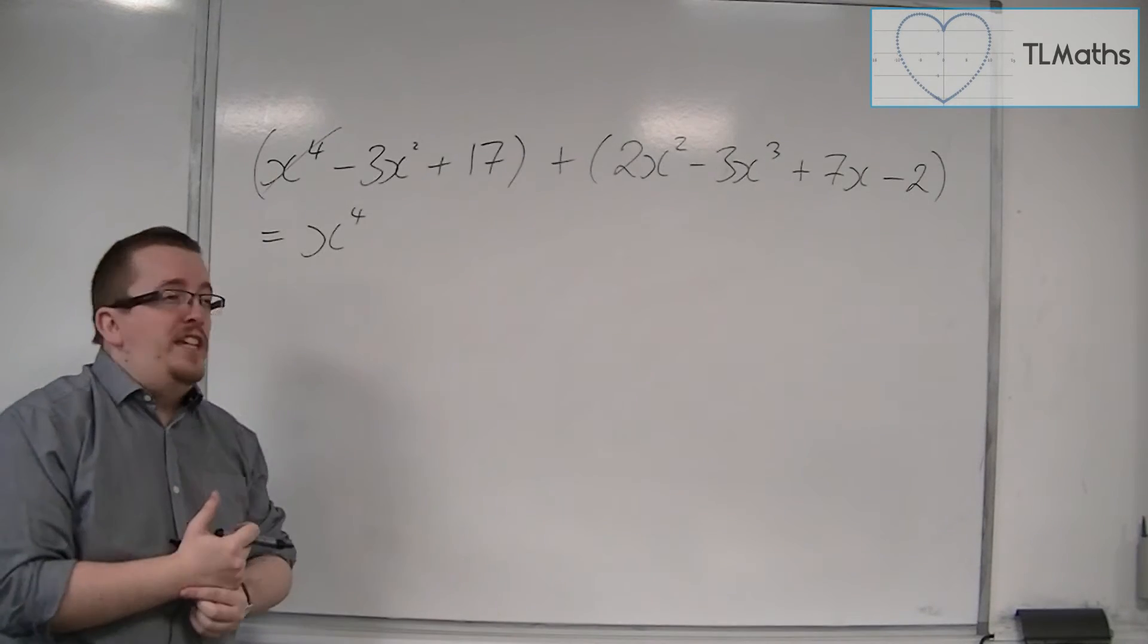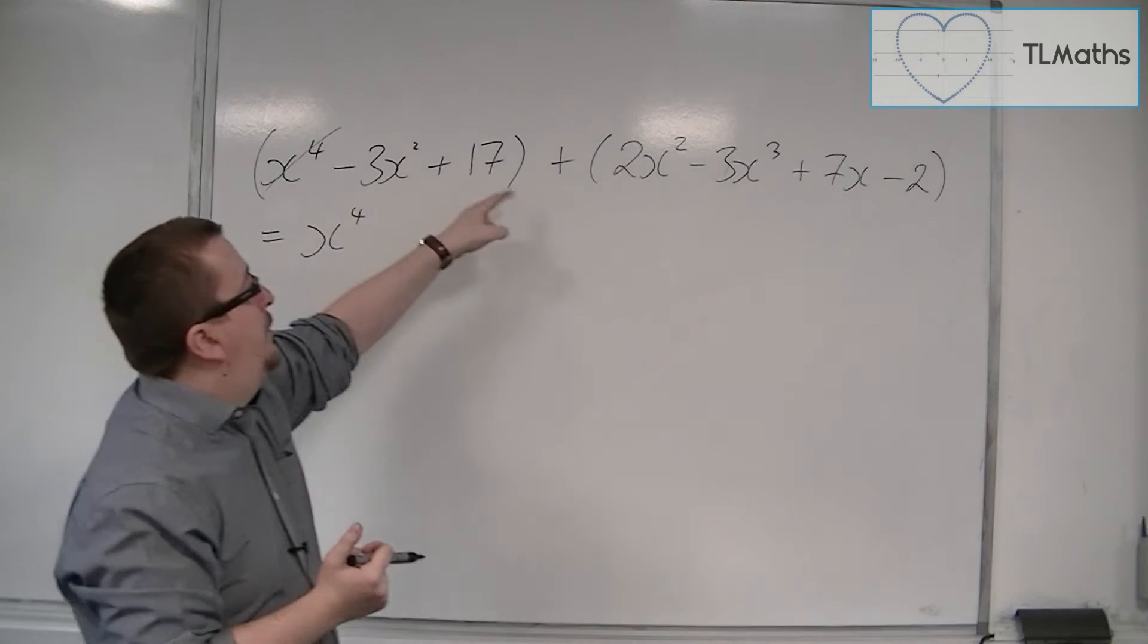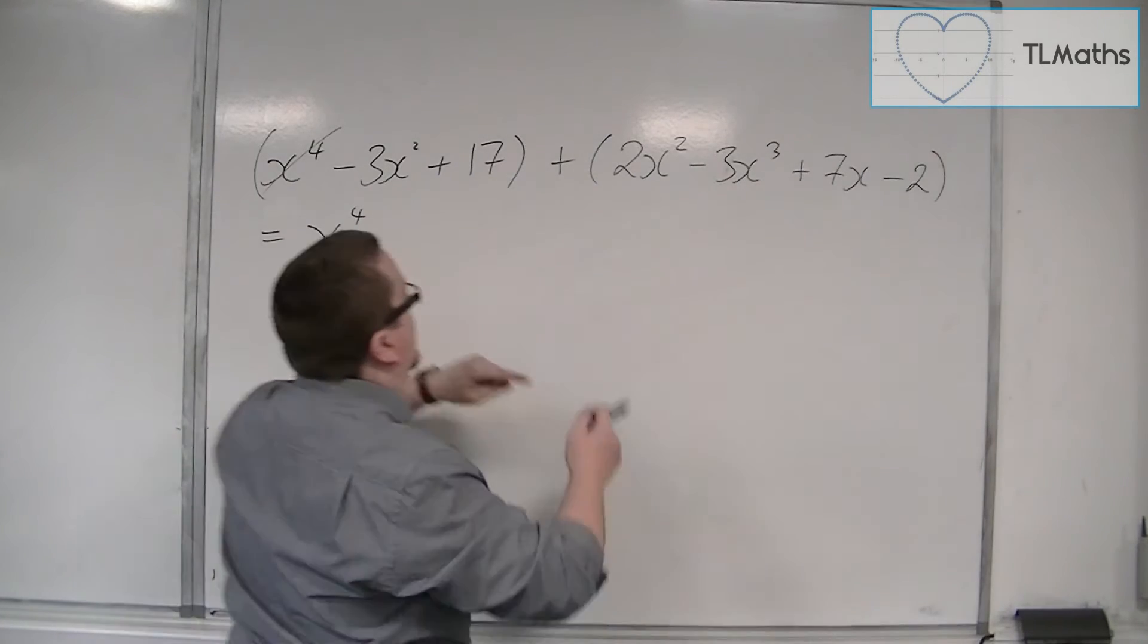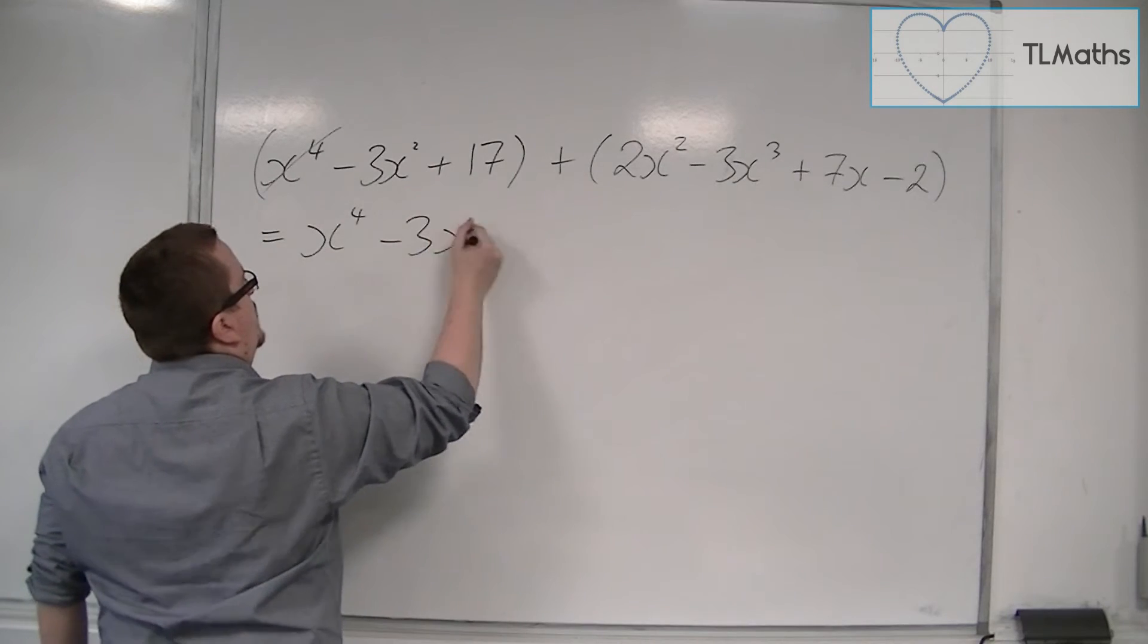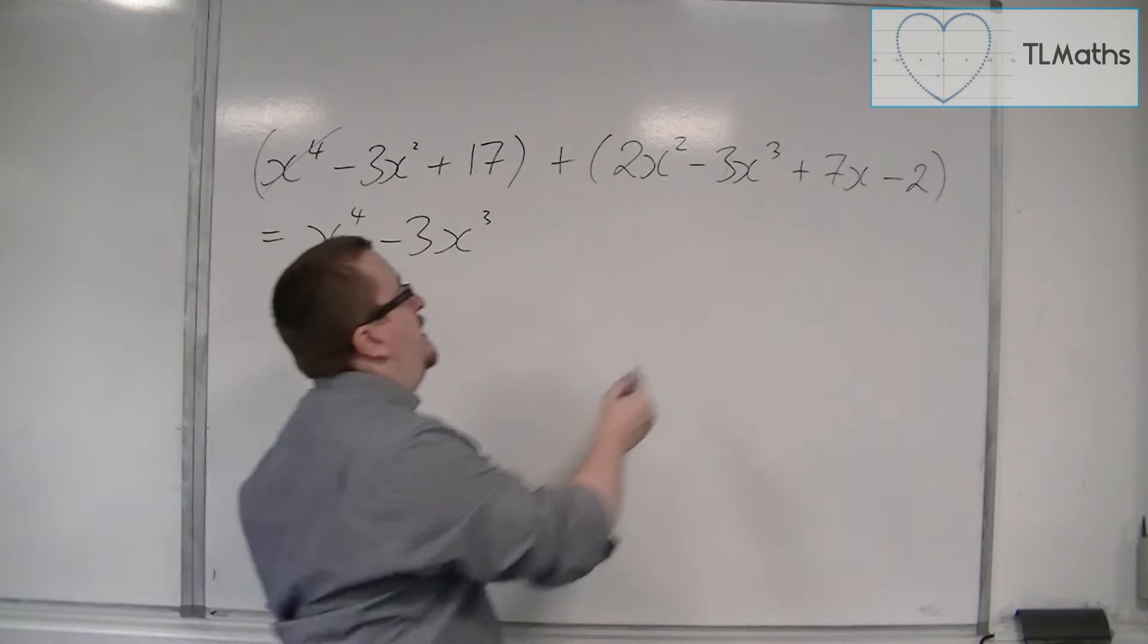Then let's see if we've got any cubes. So we've got no cubes there, we've got one of them there, so it's plus minus 3x cubed. So we're just going to write minus 3x cubed, so that deals with that one there.